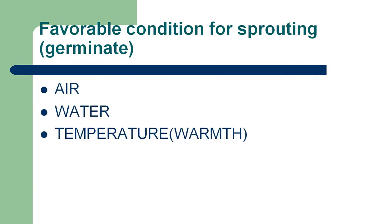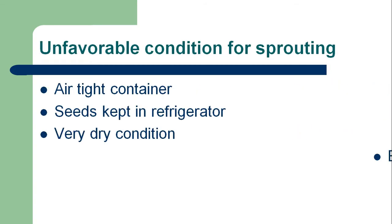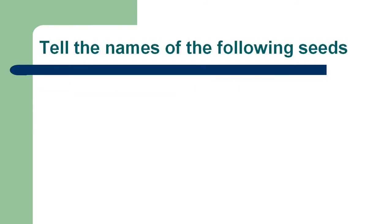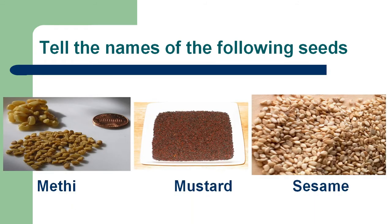Favorable conditions for sprouting: a seed needs air, water, and the right temperature to grow. In the absence of one of these, the seed might die. Unfavorable conditions for sprouting: if we keep a seed in an airtight container, keep seeds in a refrigerator or fridge, keep them in dry conditions, expose them to excess water, or keep them in very high temperature, the seed cannot grow and it will die.